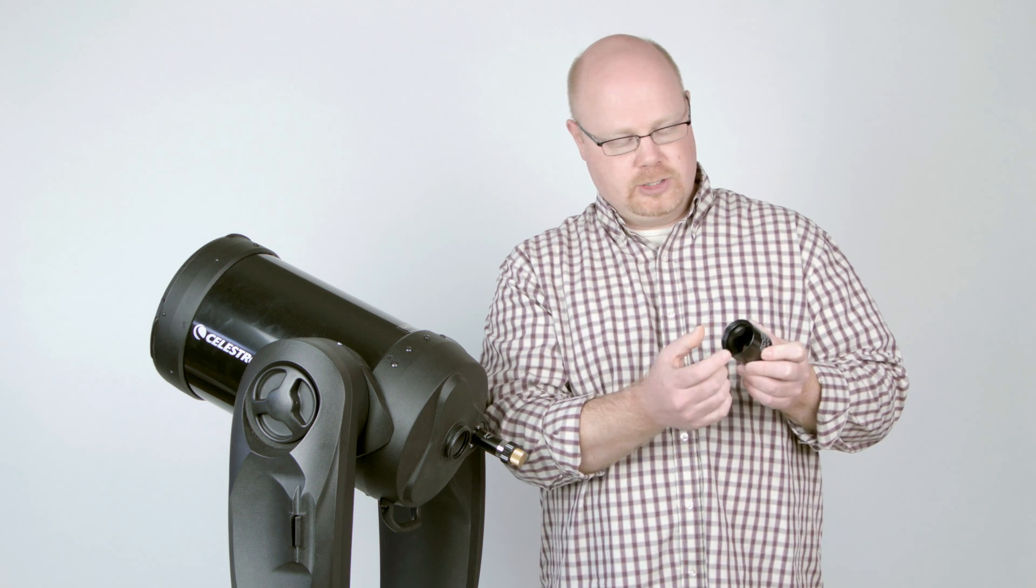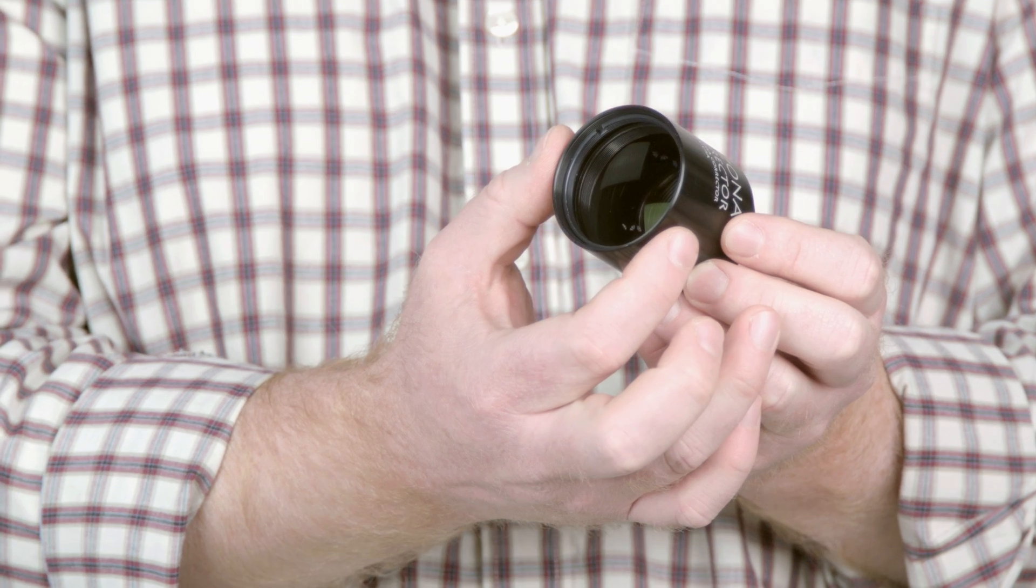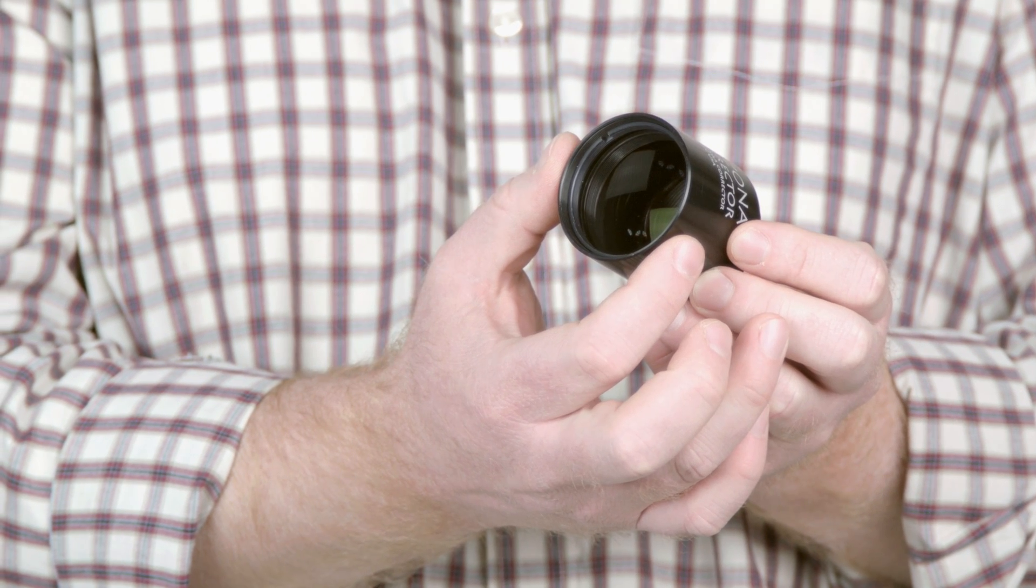The SCT corrector uses fairly large lens elements to minimize vignetting or light fall-off at the edge of the field of view, so you can illuminate a larger sensor in the camera.